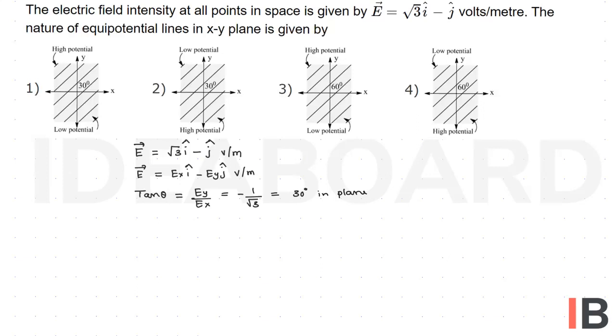Let us take the direction of the electric field in the equipotential surface. This is the high potential as per the question, x axis and y axis, and here it is low potential.